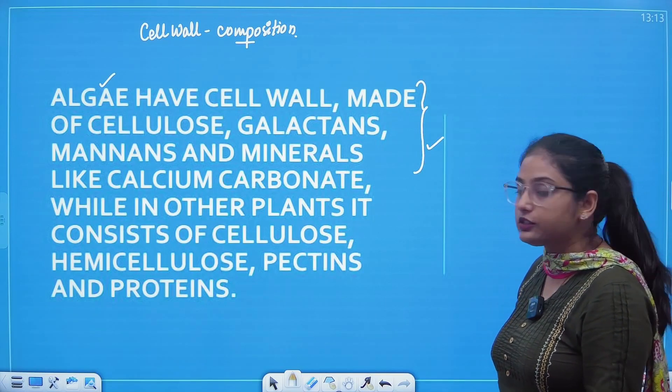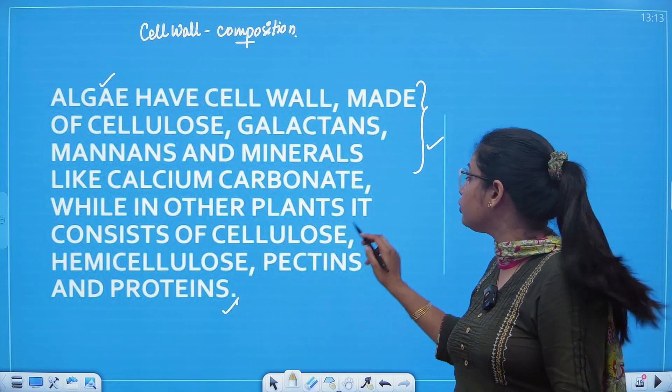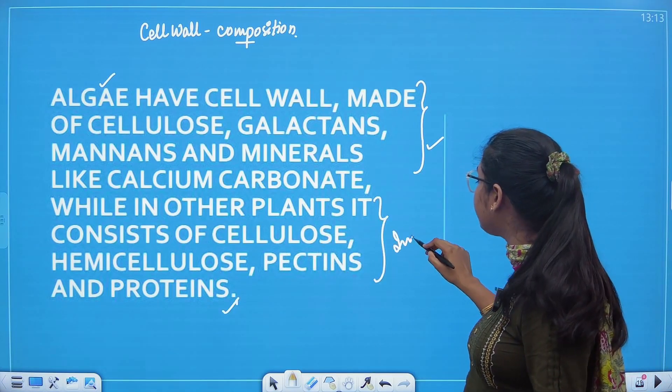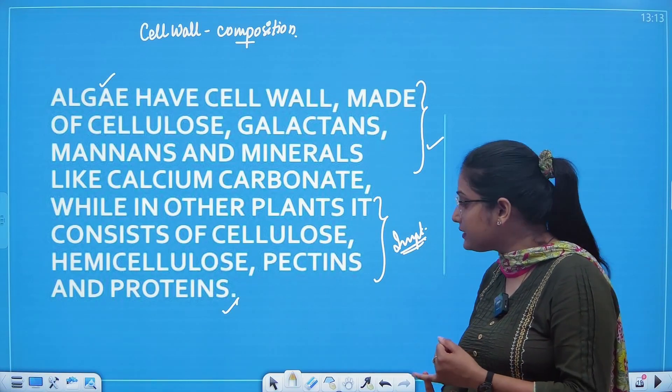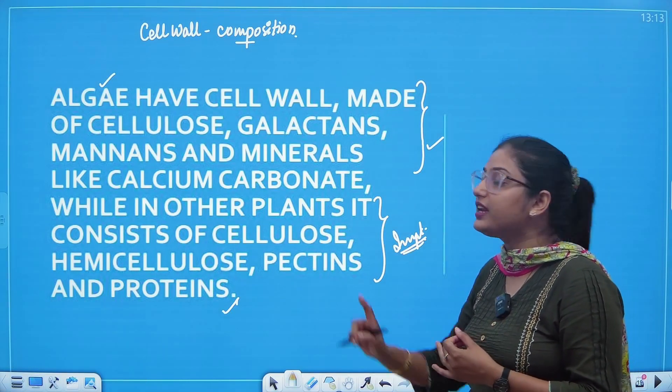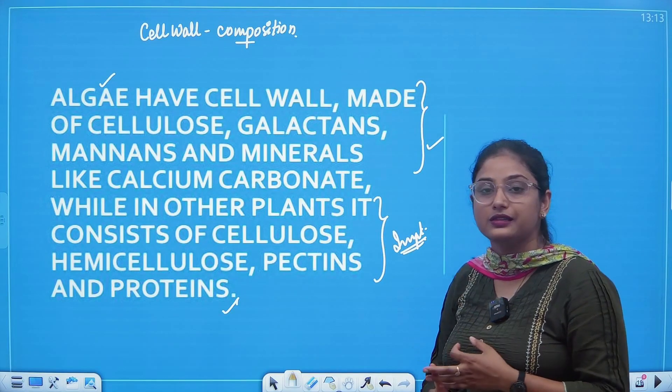While in other plants, it consists of cellulose, hemicellulose, pectins as well as proteins. This question is often asked, what components is the cell wall made of? Cellulose, hemicellulose, pectins, proteins, right? Whereas there are many forms of sugar here like galactins, mannins, minerals.